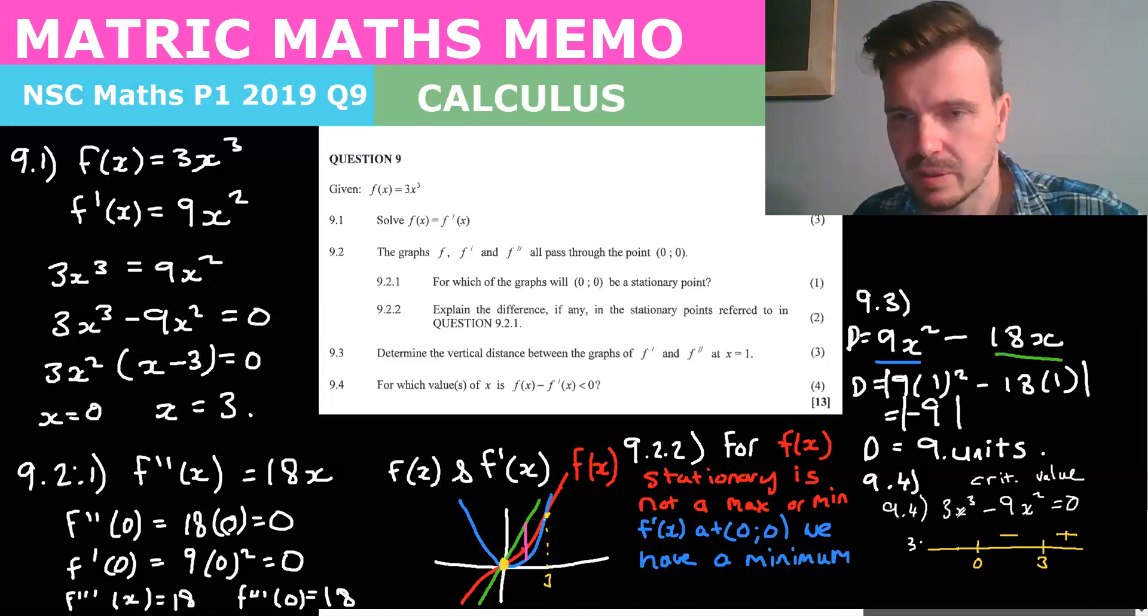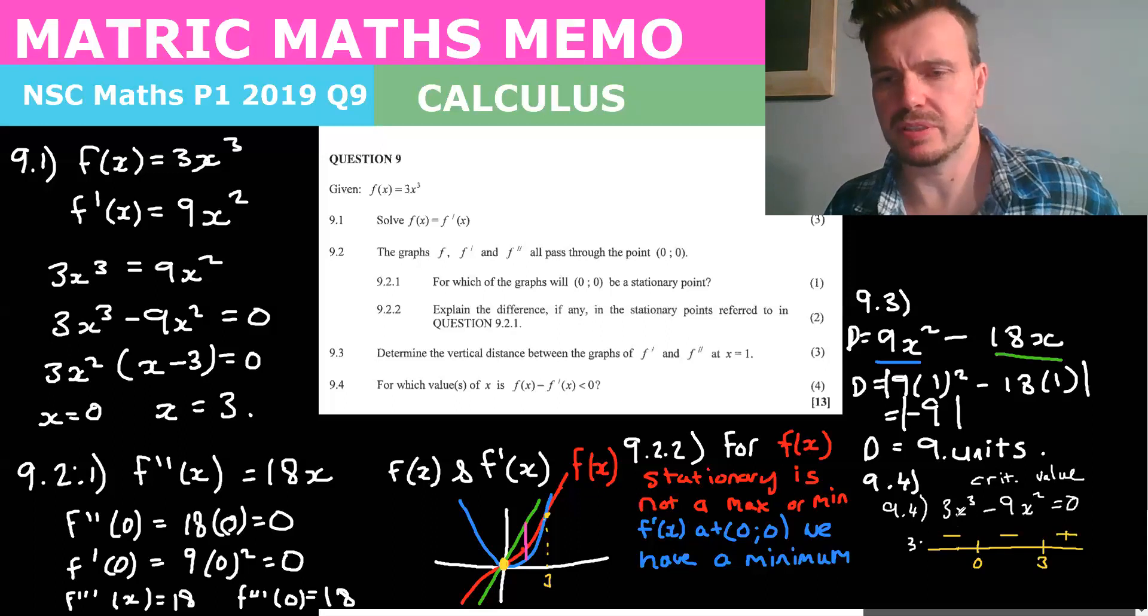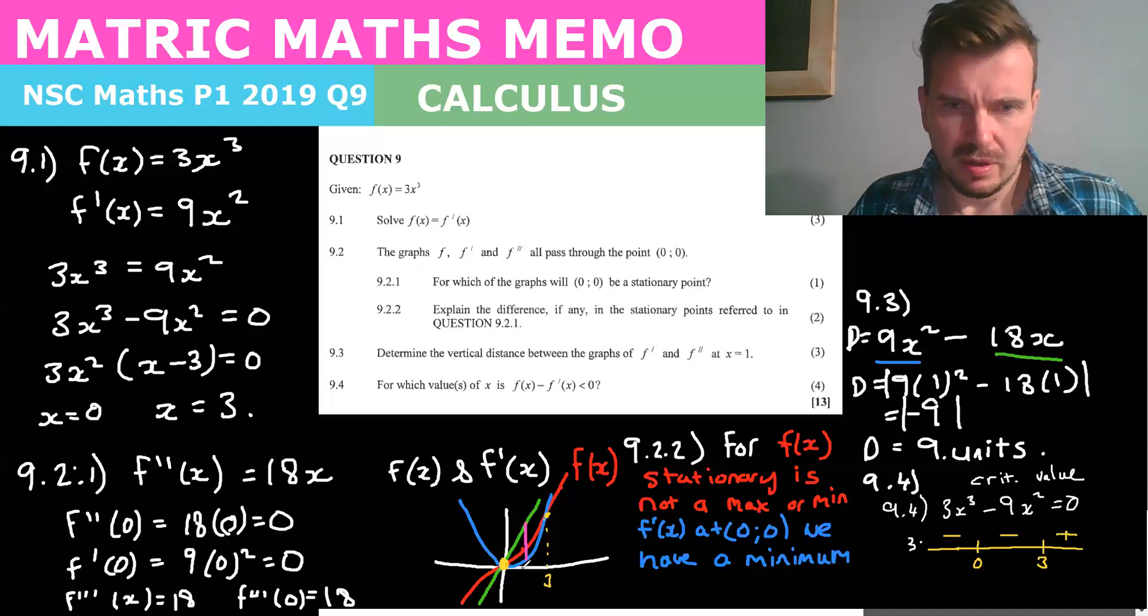And then when it is less than zero so say negative 1, 3 times negative 1 is negative 3 minus 9 is going to be negative. Let's just double check that, 3 times that's a negative and then when you make that a negative it's also a negative. Okay so that makes sense.